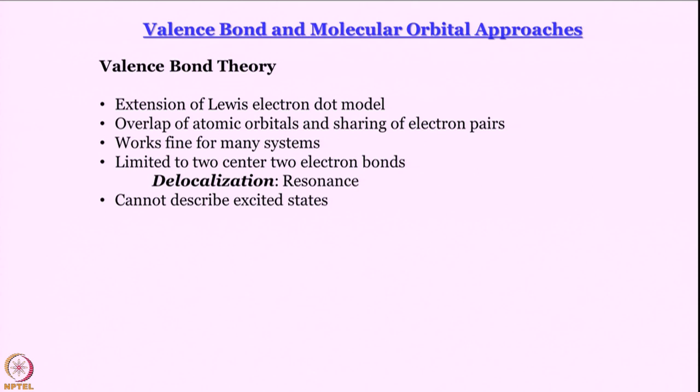There are two approaches to bonding. In valence bond theory, we essentially extend the Lewis electron dot model. We retain the concept of overlap of atomic orbitals and sharing of electron pairs, written in the language of quantum mechanics. It works fine for many systems. What it cannot handle is delocalization, and it gives us very limited access to excited states. It can talk about singlet and triplet states of dihydrogen, but many states are not accessible. Molecular orbital theory can give us access to many more things.